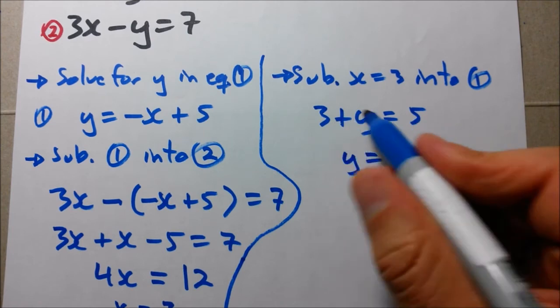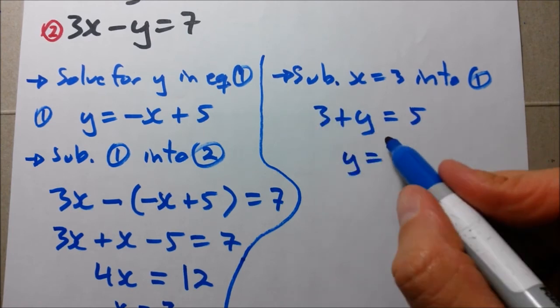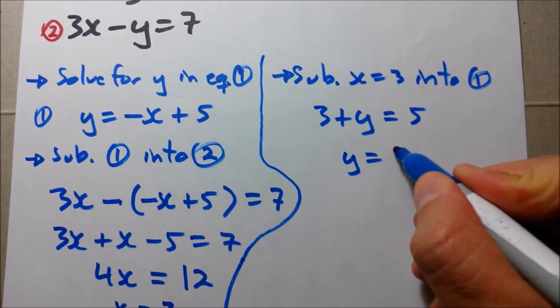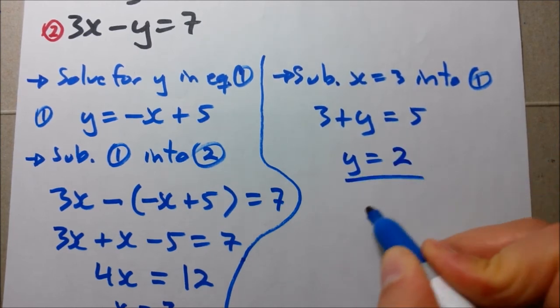y becomes 5. When you move 3 to the other side of the equal sign, you get 5 minus 3 equals 2. So that's it. That's our next coordinate.